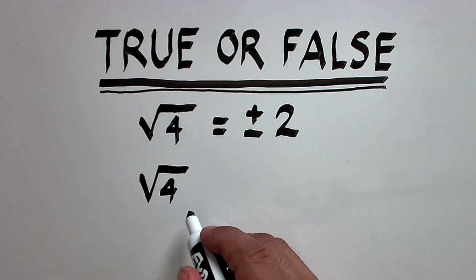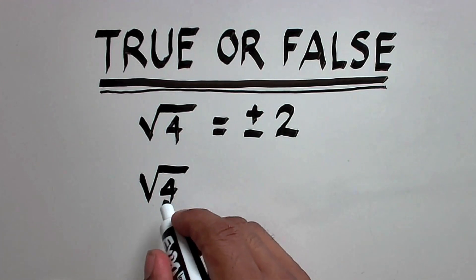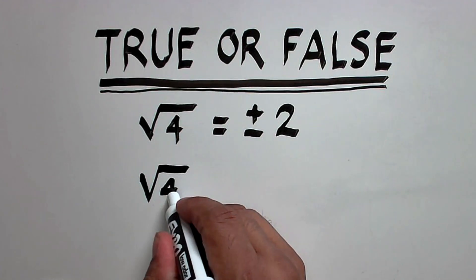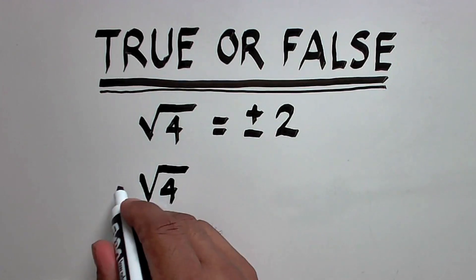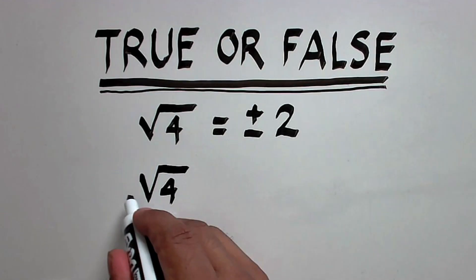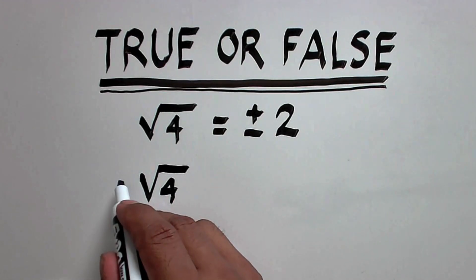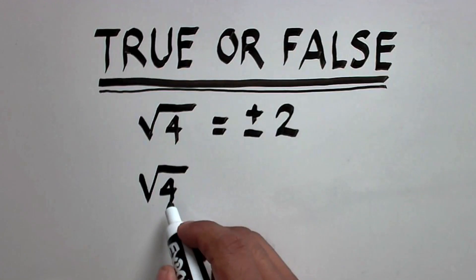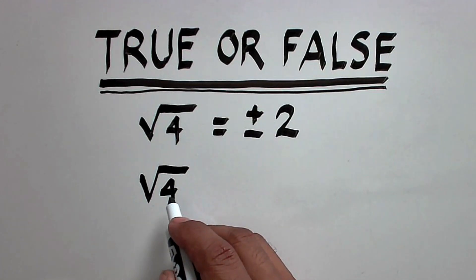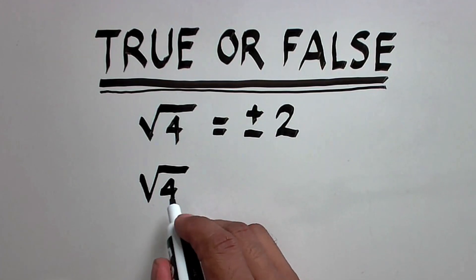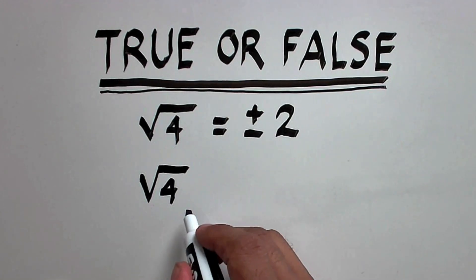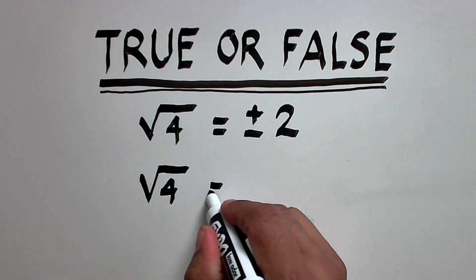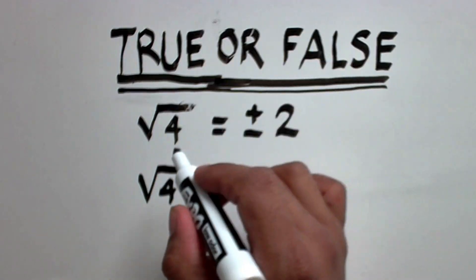We are not solving an equation, we are computing. This is just pure computation. When there is no sign before the square root symbol, it is implied that we are computing for the principal square root, or the positive square root. Therefore, this is just equal to positive 2.